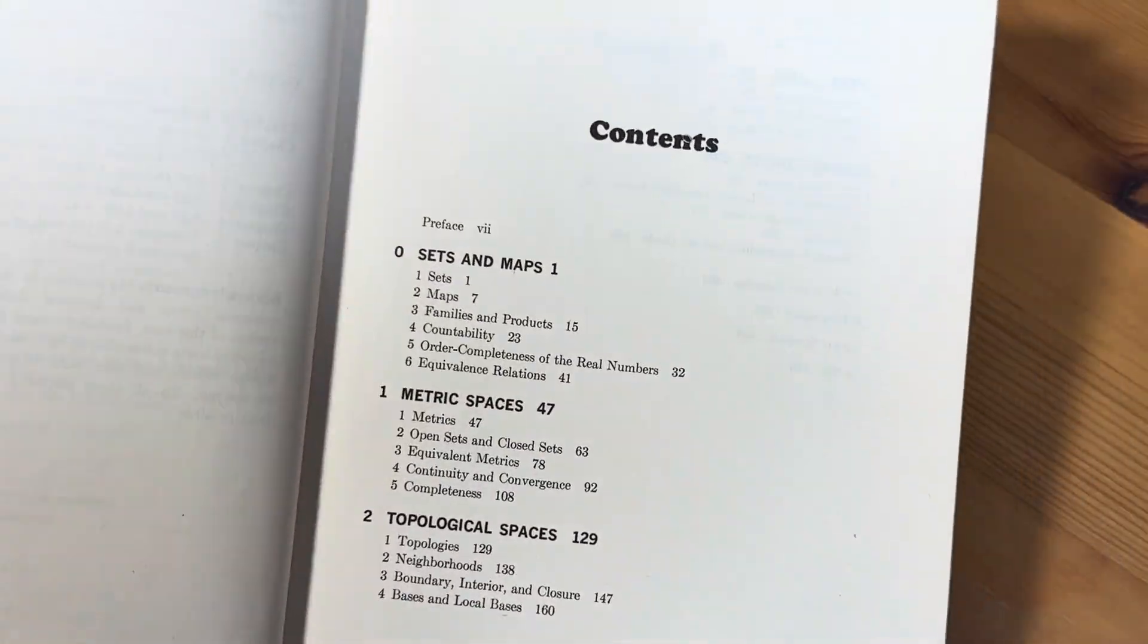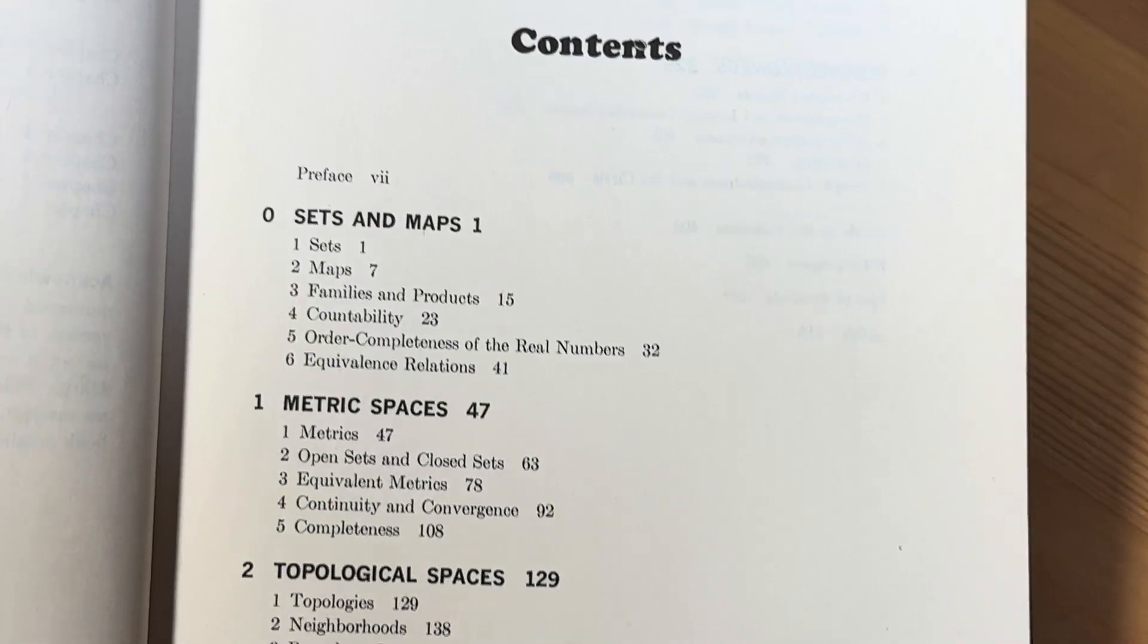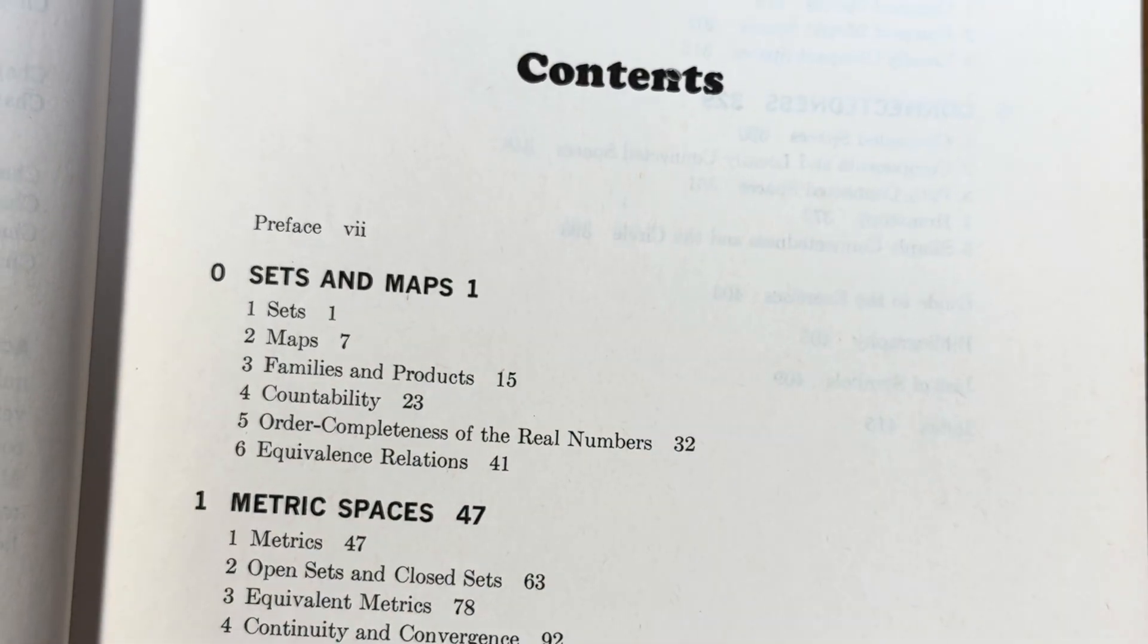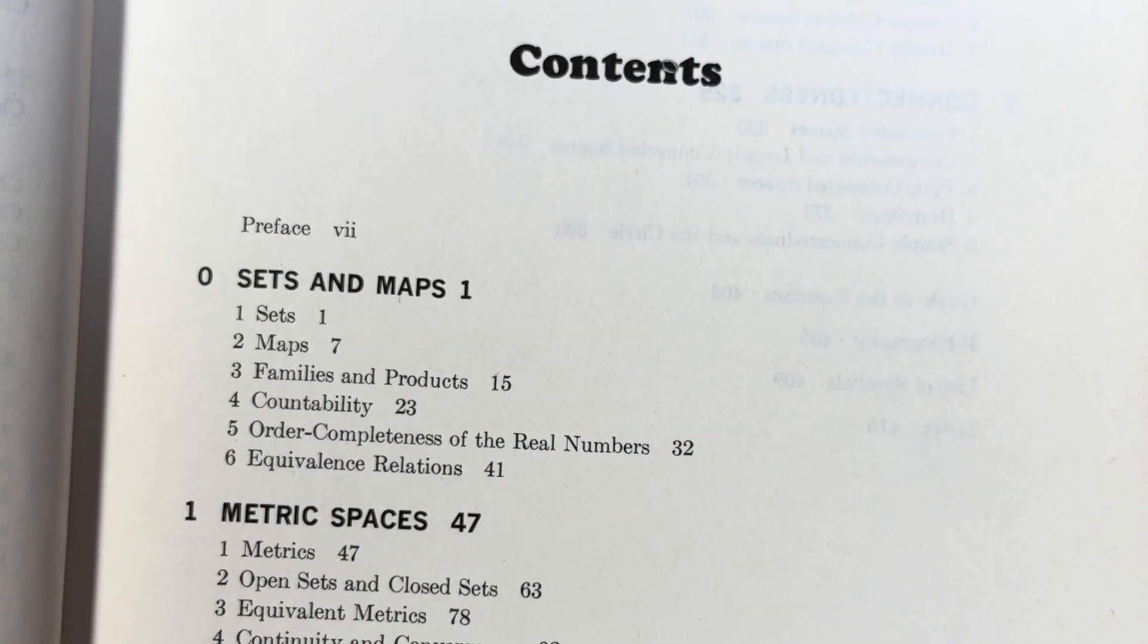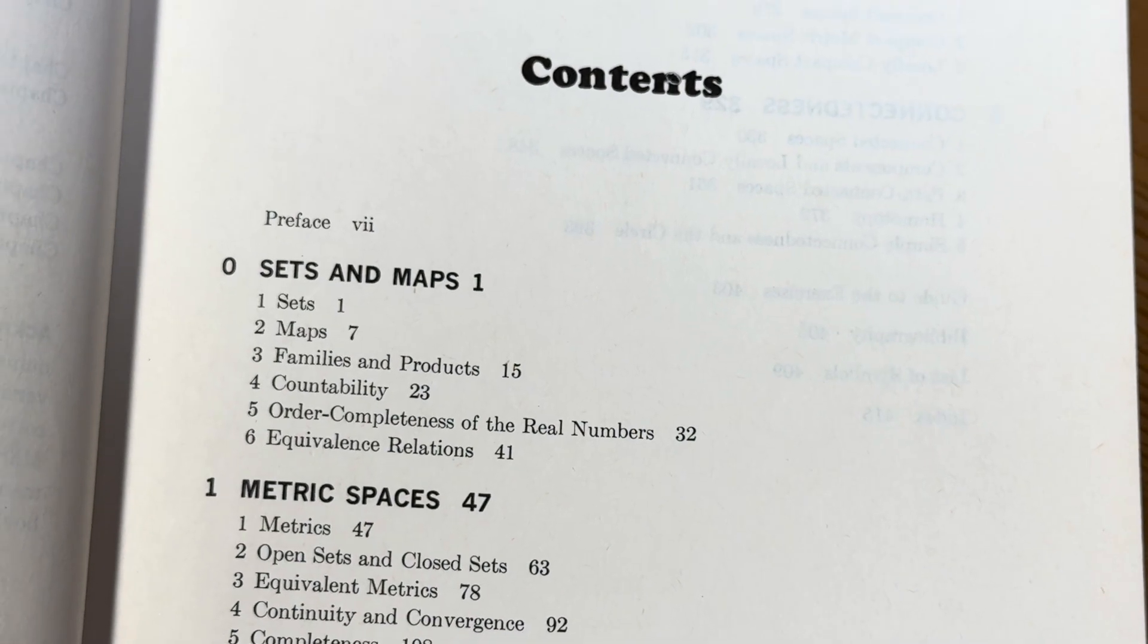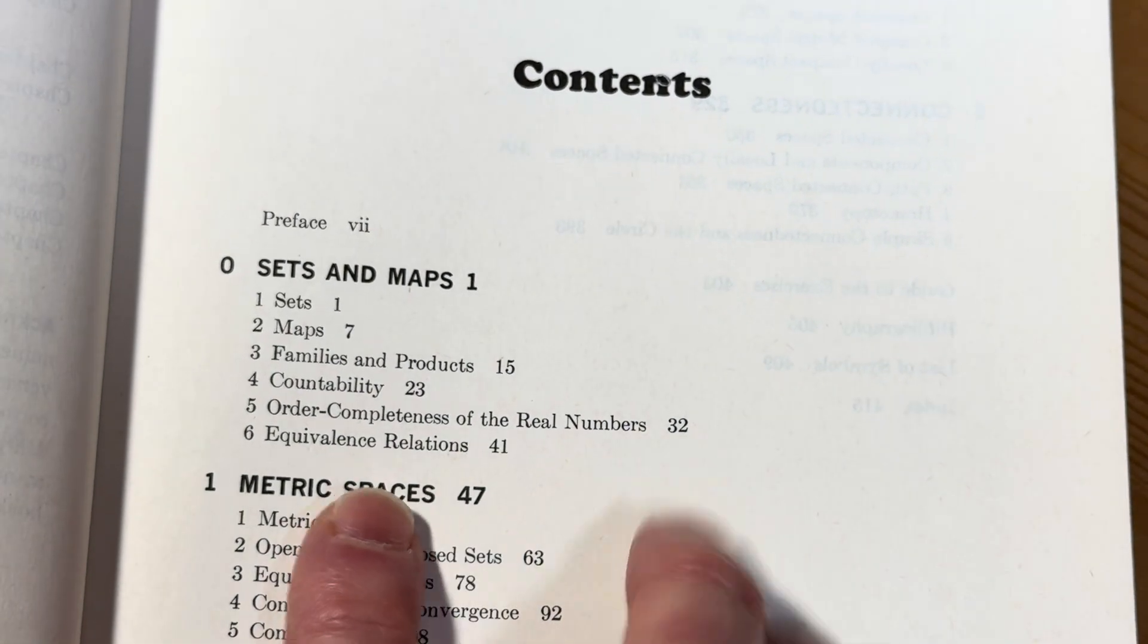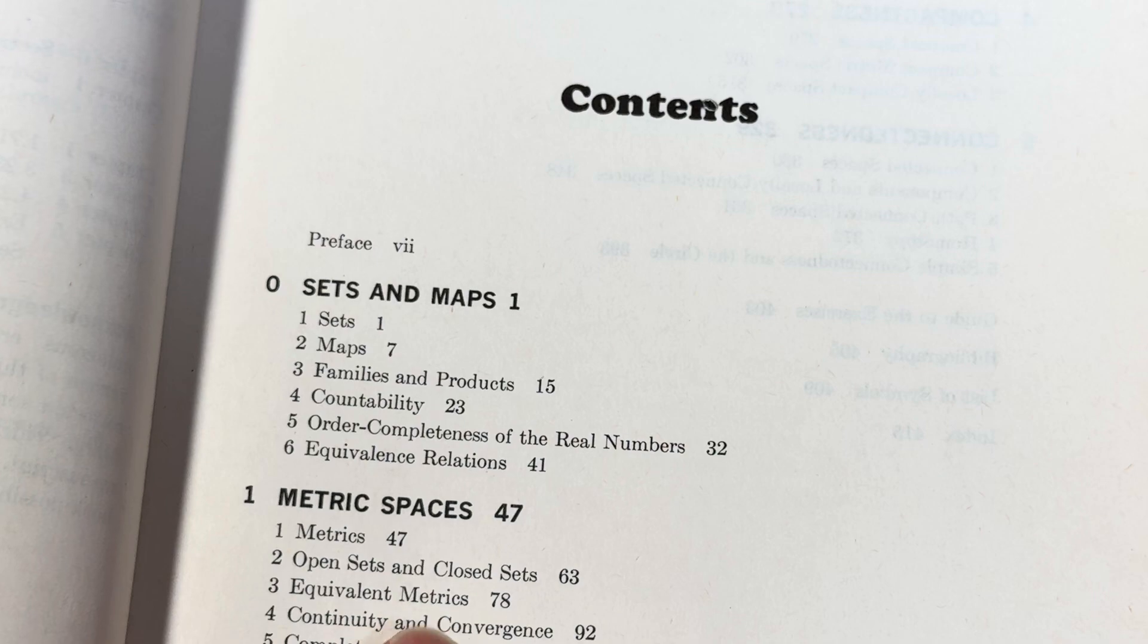And then here's a look at the contents. You can see what it contains. Sets and maps. We have sets, maps, families, and products. Accountability. Order completeness of the real numbers. Equivalence relations. So really good stuff there.